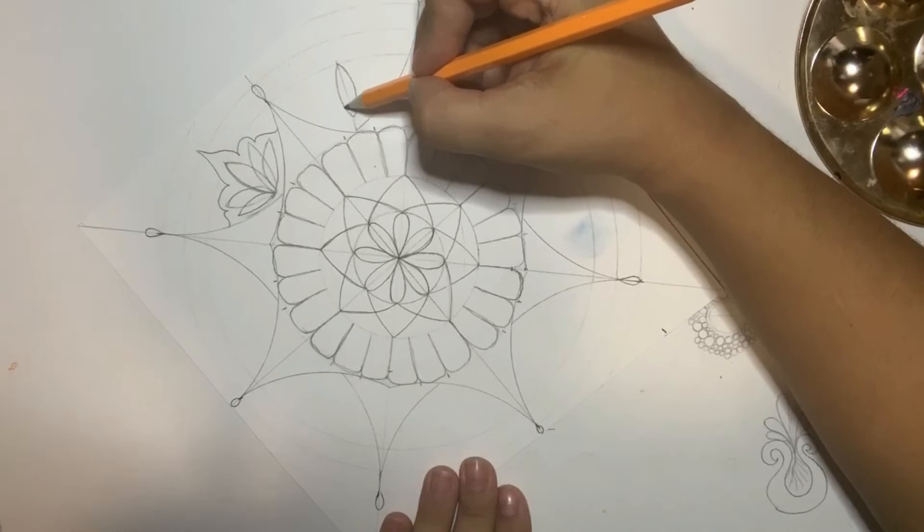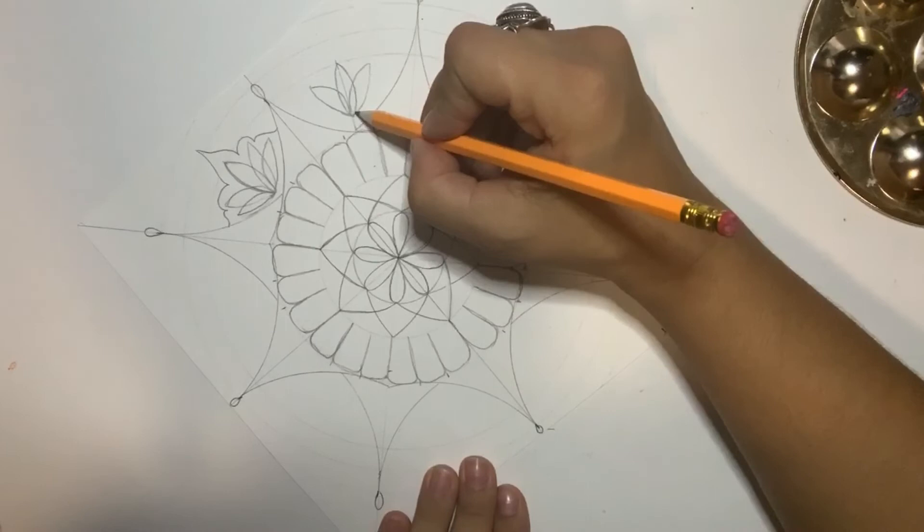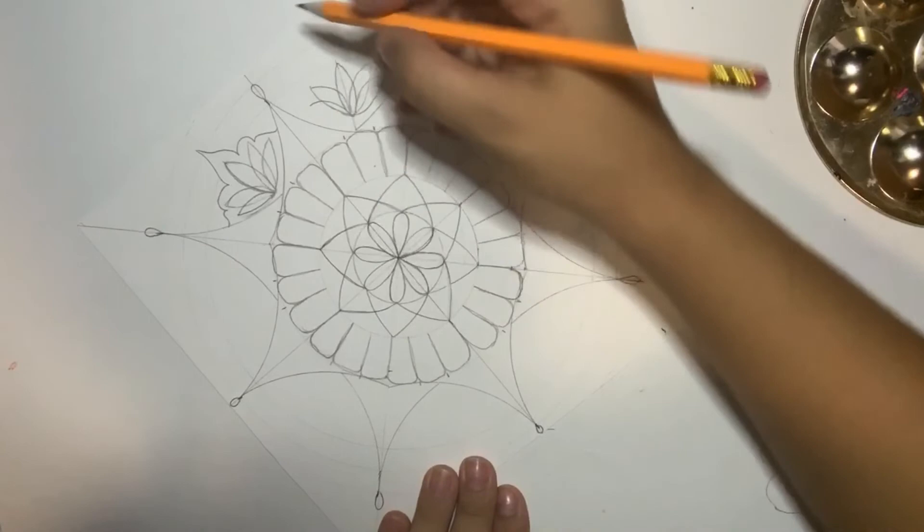So again, I have an imaginary line here making this connection. And then I'm gonna open other petals to the right and to the left to keep symmetry. And let's keep our sketching, enjoy the process.